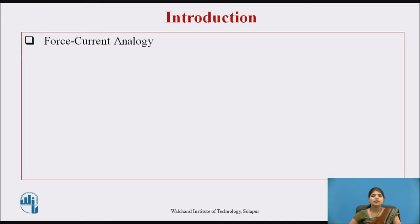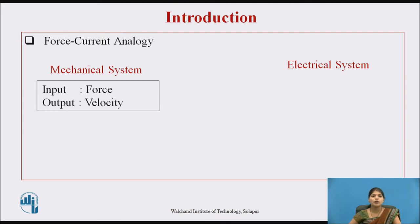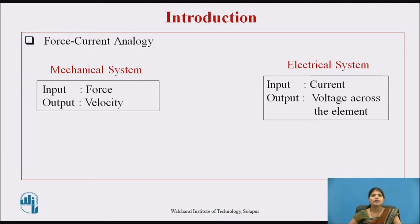In this video lecture, we are going to discuss force current analogy to convert a mechanical system into an electrical system. In the mechanical system, the input is force and the output is in terms of velocity or displacement. In the electrical system for force current analogy, the input is a current source and the output is voltage across the element.